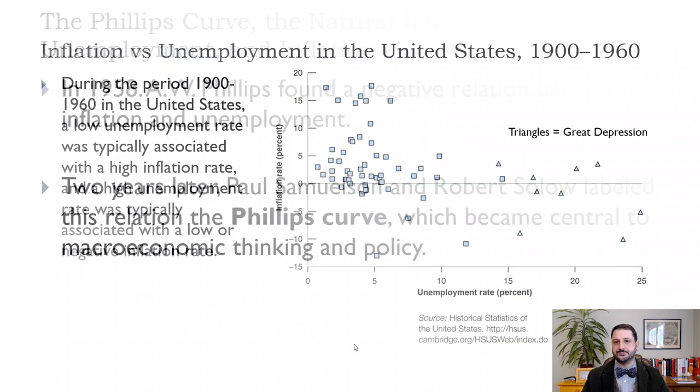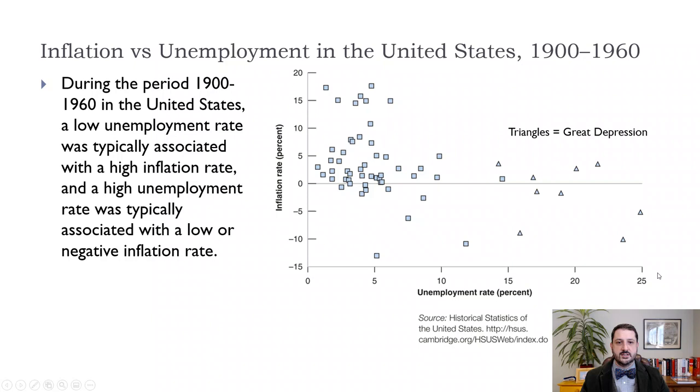So here we have a graph of the unemployment rate on the horizontal axis and the inflation rate on the vertical axis, which is the way we usually graph the Phillips curve. Although sometimes you will see employment on the horizontal axis, so it'll be inverted. And you can see there seems to be a downward relationship between inflation and unemployment. So that when the unemployment rate is high, the inflation rate is low. And when the unemployment rate is low, inflation is high. These triangles in the data are the Great Depression. So that's the 1930s. And this is data that goes from 1900 to 1960. So this is the data that Solow and Samuelson were looking at.